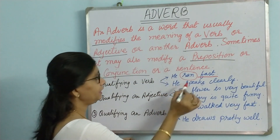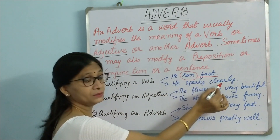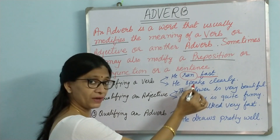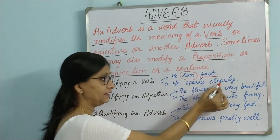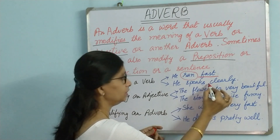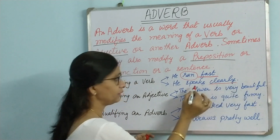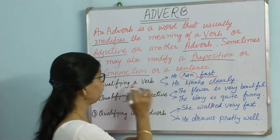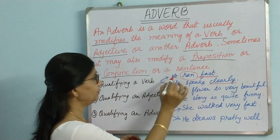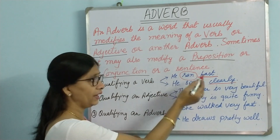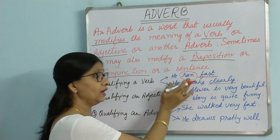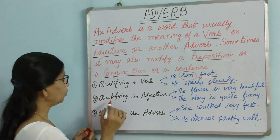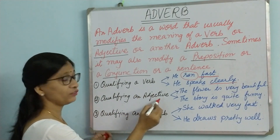Second example: 'He speaks clearly.' Here again, it is qualifying a verb. 'He speaks' — 'clearly' is the adverb, and it is saying something about the word 'speaks,' which is a verb. So here is another example of how an adverb qualifies a verb.